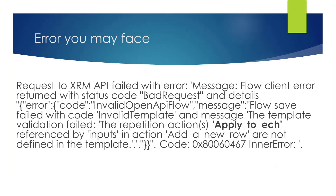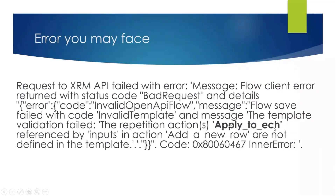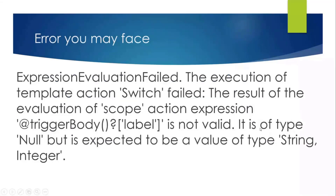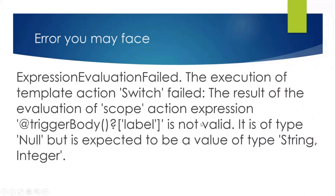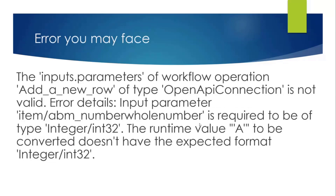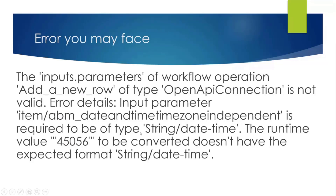Let me jump to some errors I faced during development. If you apply 'Apply to each' incorrectly, you may receive an error — the resolution is to check which component name you are using in 'Apply to each'. I also faced an error when passing null to the child Power Automate responsible for the option set. I encountered another error when passing an incorrect value to the integer column, and another when setting a string instead of a date-time value. I've noted all these errors that I faced during development.